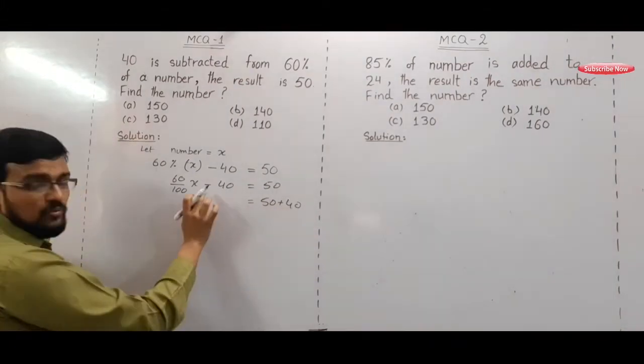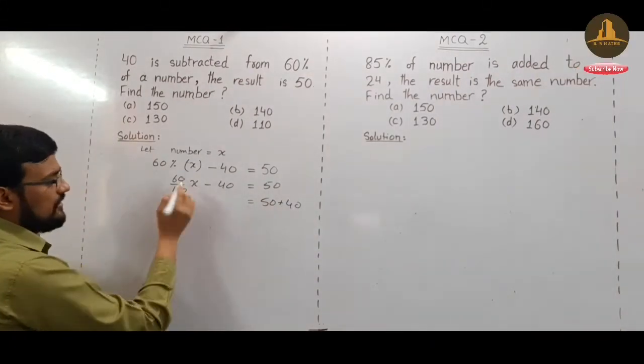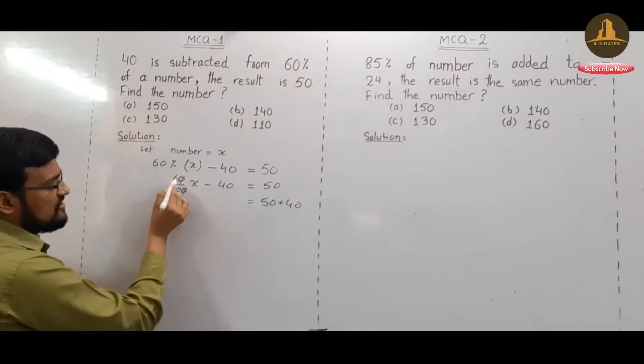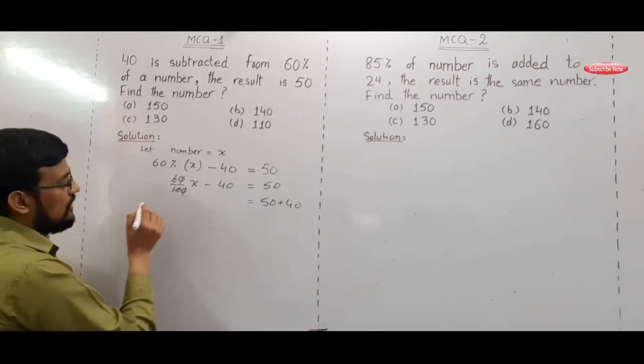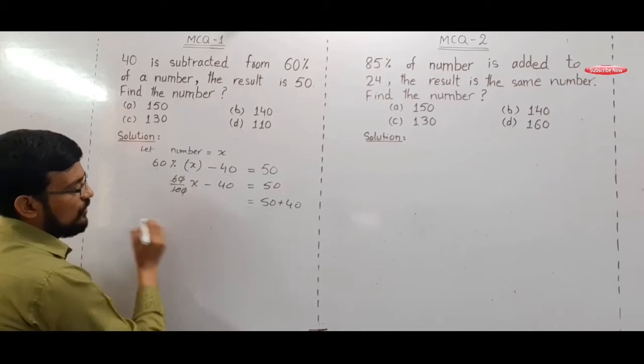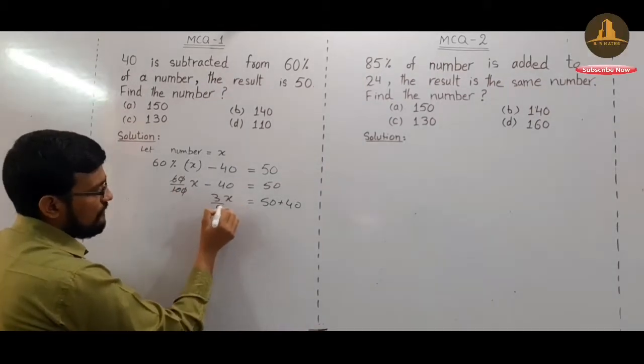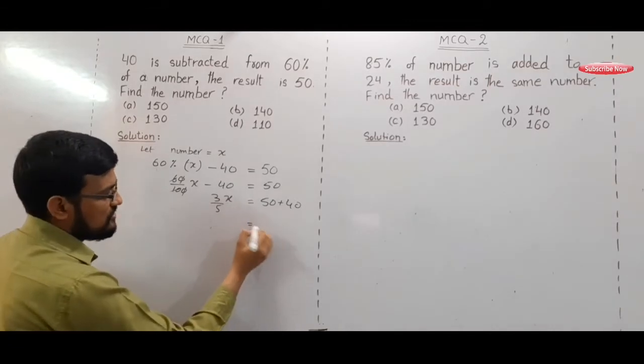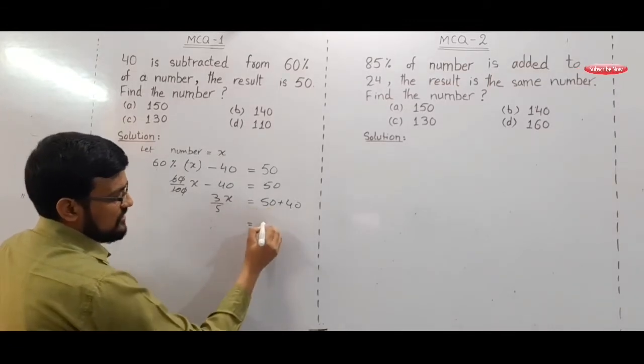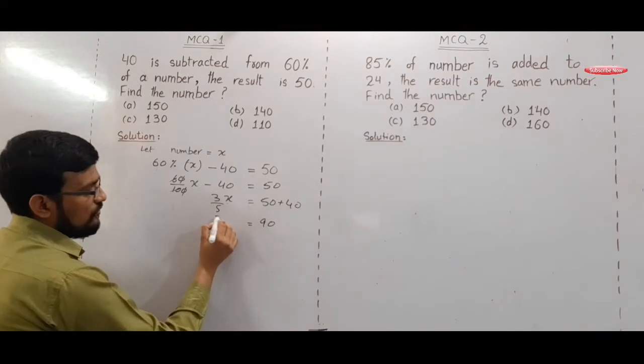Here, 0 cancels with this 0, and 60 divided by 10 means 3 over 5. So 3 over 5 X. Very simple question students. This sum is 90 equals 3 over 5 X.